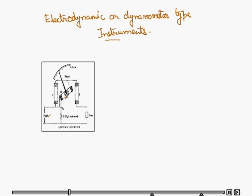In construction, it is having two coils. We call one fixed coil and the other one is the moving coil. The fixed coil is split into two equal parts, which is placed parallel to each other as shown in the figure. This is the fixed coil and this is another fixed coil and this is the moving coil.